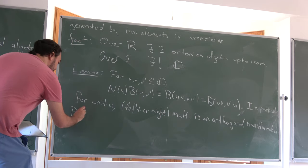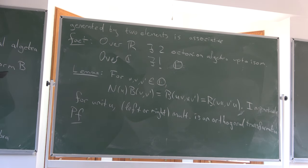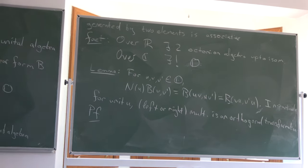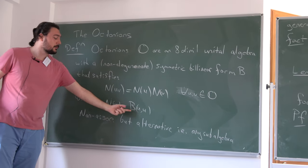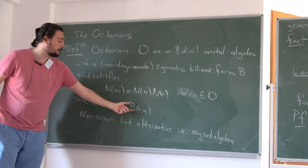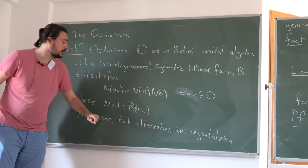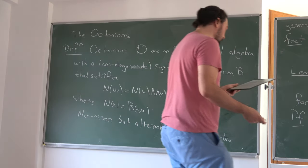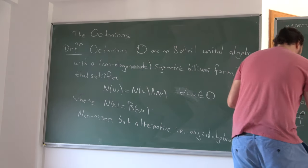The proof uses one key fact: how to go between the associated quadratic form and the bilinear form. The bilinear form is defined using the quadratic form, but you can also recover the bilinear form from the quadratic form for arbitrary U and V. It's basically just an application of that polarization identity.